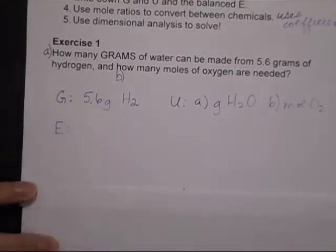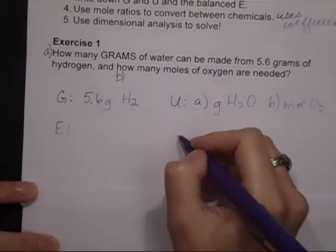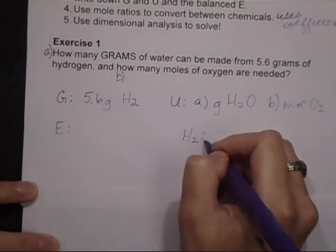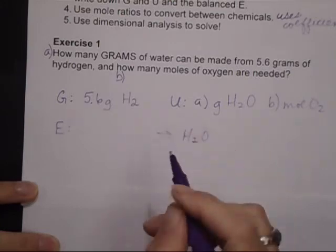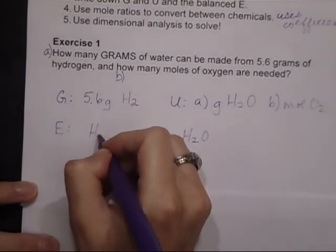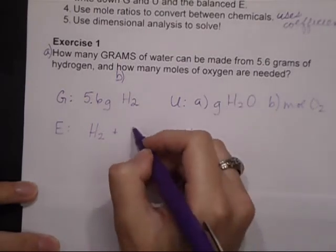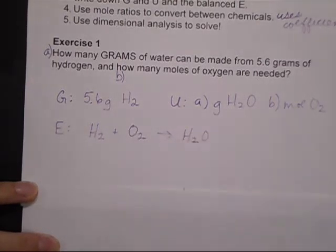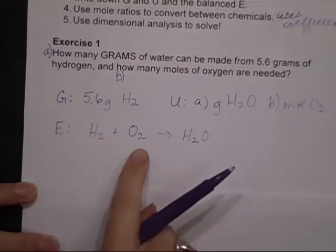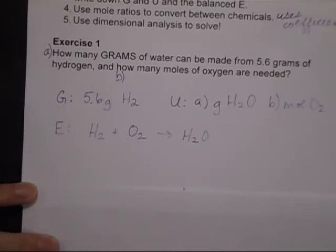The equation that I'm working with here is how many grams of water can be made, so that's our product, from 5.6 grams of hydrogen, and how many moles of oxygen are needed. So those are the components of my equation: hydrogen gas plus oxygen gas makes water, and I need to balance this.